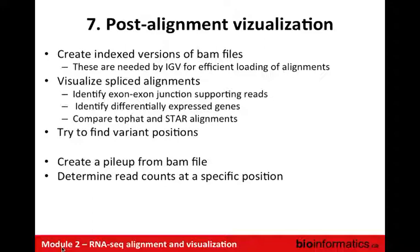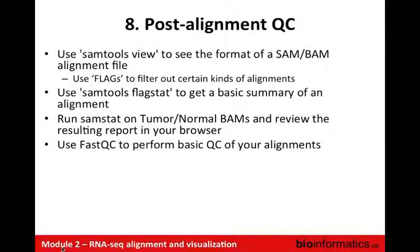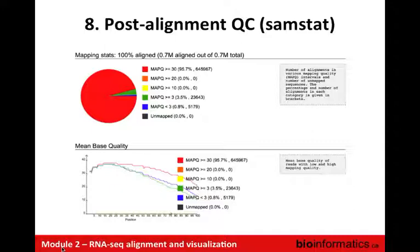Here's another IGV screenshot showing post-alignment visualization with two different samples — a tumor and a normal. For post-alignment QC, we'll use SAMtools view to examine the SAM/BAM format and look at flags and filter alignment types; SAMtools flagstat for an overall summary of alignments; SAMstat on tumor and normal BAMs to review the resulting report in a browser; and FastQC again, this time to perform QC on the actual alignment files rather than the FASTQ files.